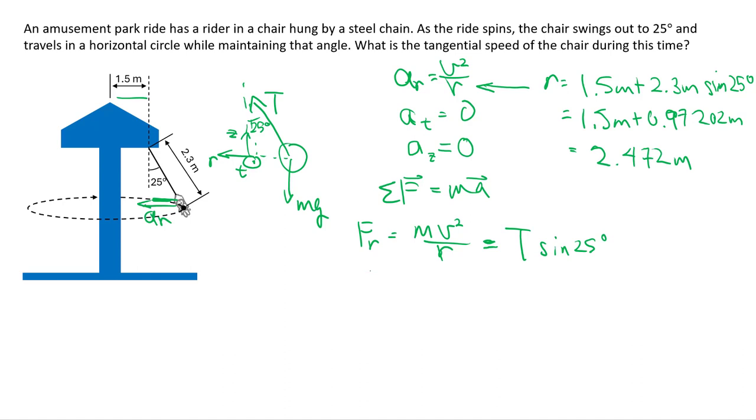But what is T? Well, we have to look at the z direction then. Sum of forces in the z direction is equal to zero, that's equal to T cosine 25 degrees minus mg. And so we can solve for T here to sub into the other one.